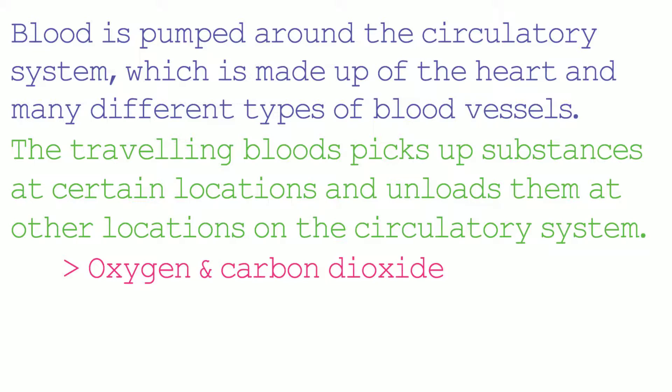Another substance that travels in the circulatory system is nutrients. Nutrients travel from the gut to all over the body. A final example is hormones. Hormones enter the bloodstream at various locations and travel to various other locations. An example of a hormone is follicle stimulating hormone, or FSH. FSH is secreted by the pituitary gland and travels in the bloodstream to cause an egg to mature in the ovary of a woman.